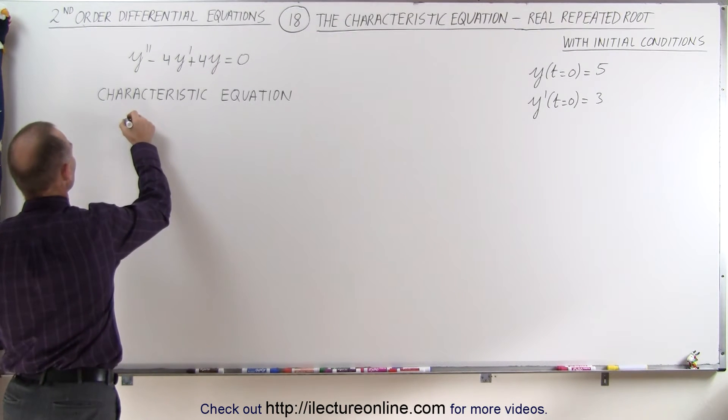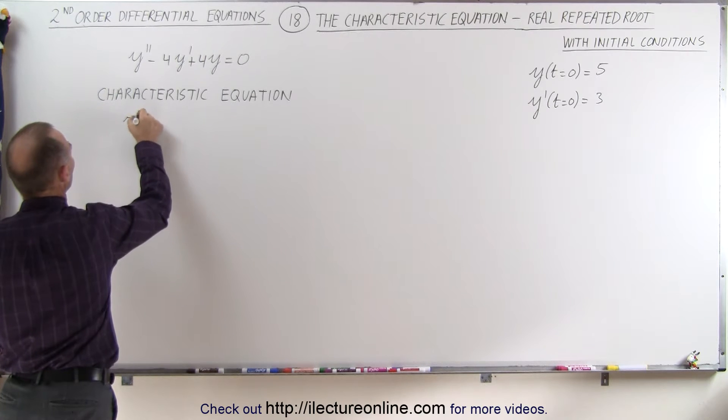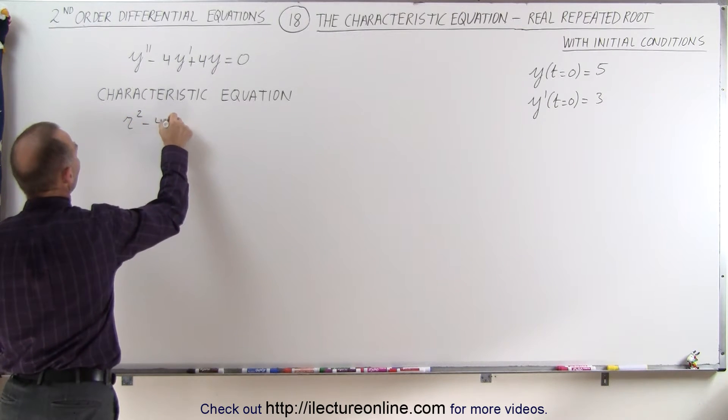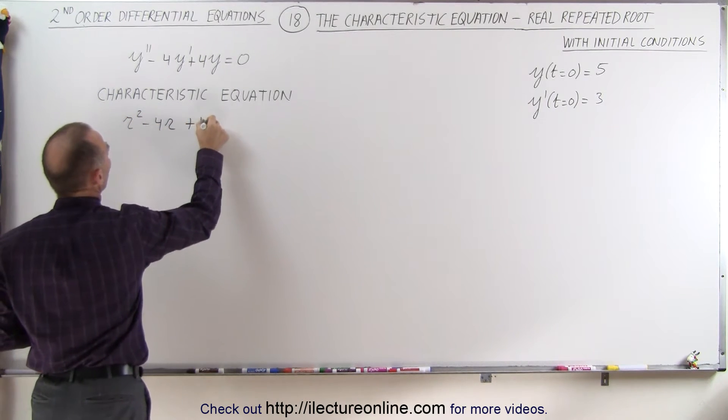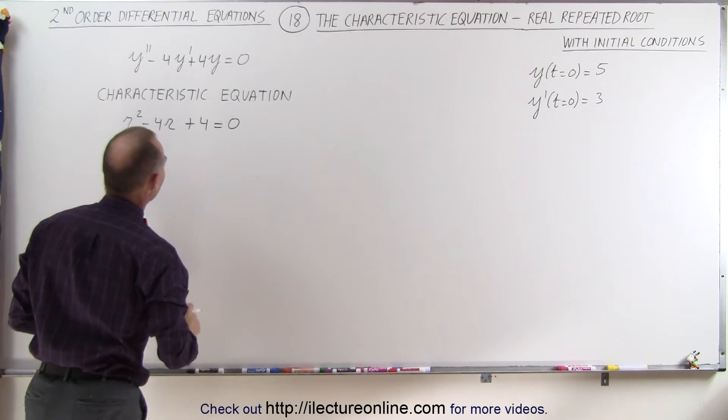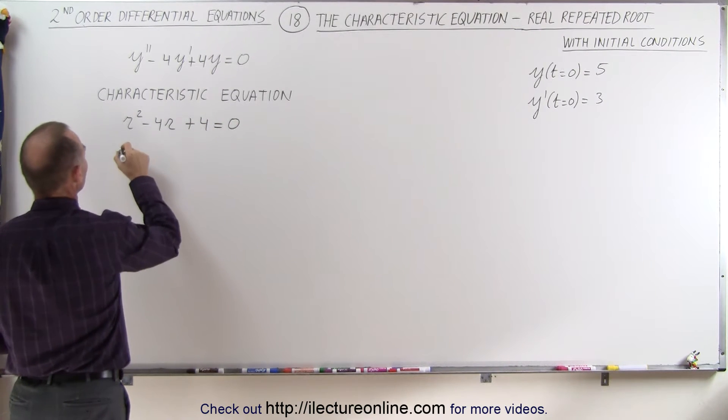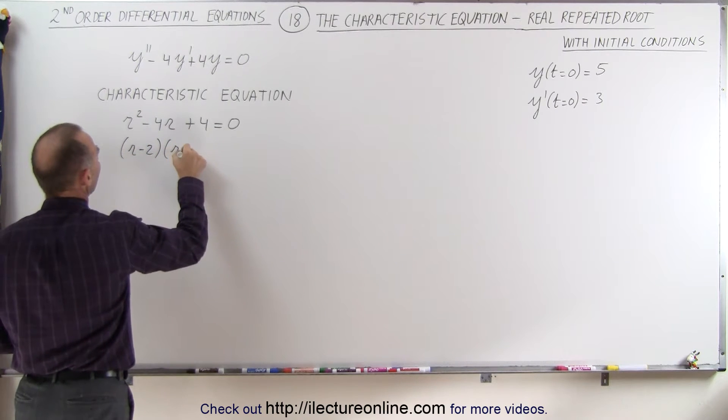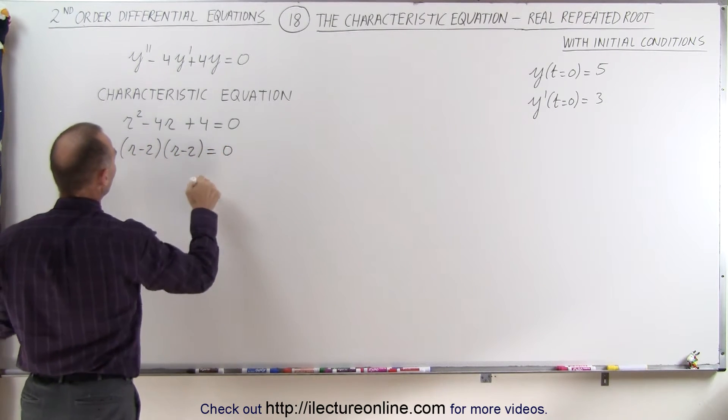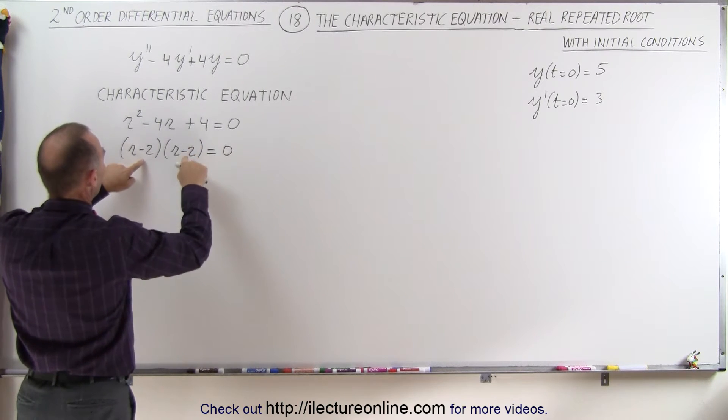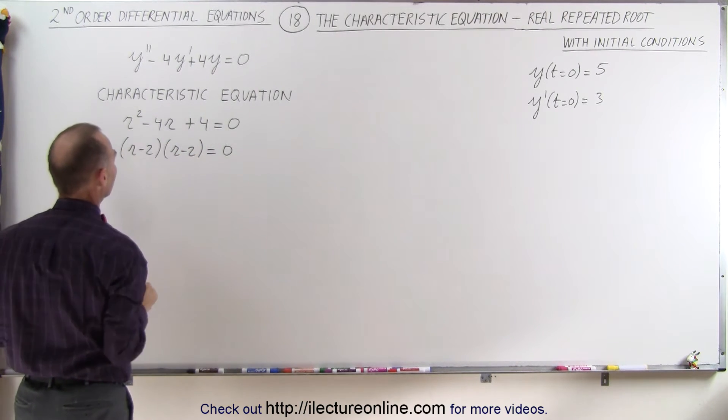So let's go ahead and give us the equation. We have r squared minus 4 times r plus 4 equals 0. I believe we can factor this. This can be factored to be r minus 2 times r minus 2 is equal to 0. When you multiply you get plus 4, when you add you get minus 4. So that looks good.